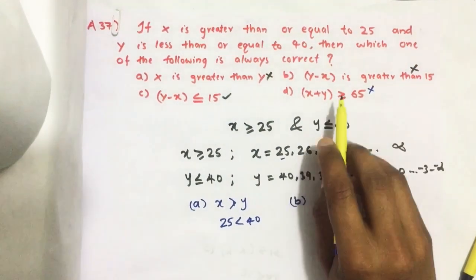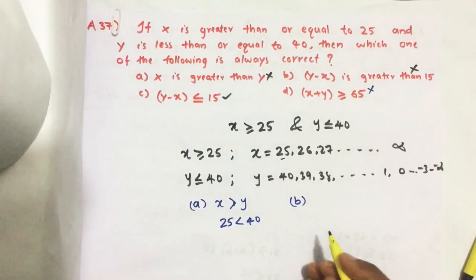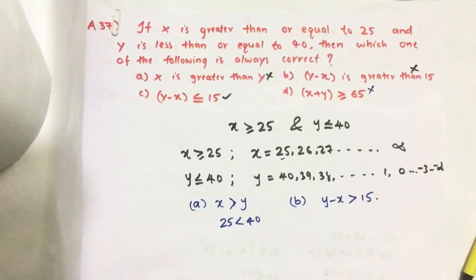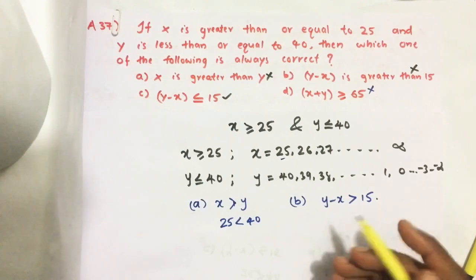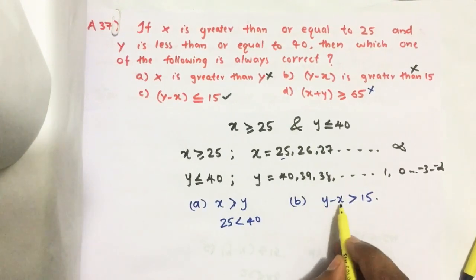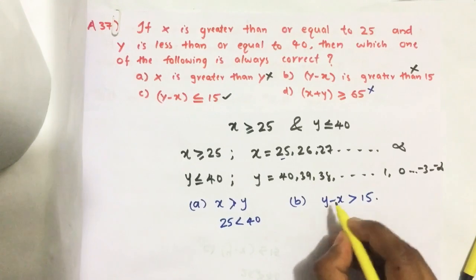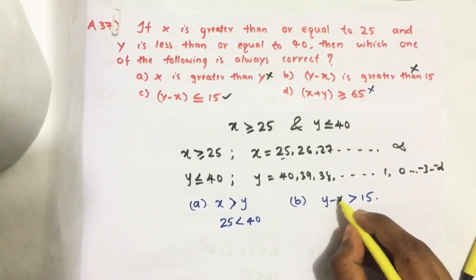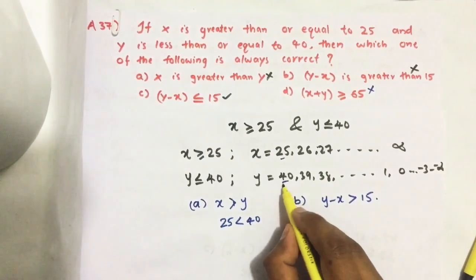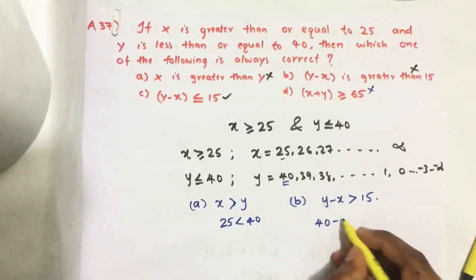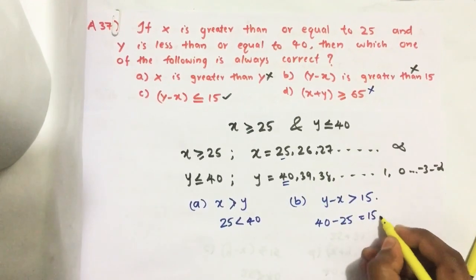Option B: Y minus X is greater than 15. Let us see what is the maximum value we can get from Y minus X operation. To get maximum value from this operation, we should take the maximum value of Y and the minimum value of X. The maximum value of Y is 40 and the minimum value of X is 25, which equals 15.